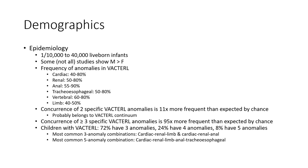Demographic epidemiology: one in 10,000 to 40,000 births, affecting males and females. Some studies show predominance in males. Frequency of anomalies: cardiac 40–80%, renal 50–80%, anal 55–90%, tracheoesophageal 50–80%, vertebral 60–80%, limb 40–50%. Concurrent occurrence of two specific VACTERL anomalies is more frequent than expected by chance, probably belonging to a VACTERL continuum.